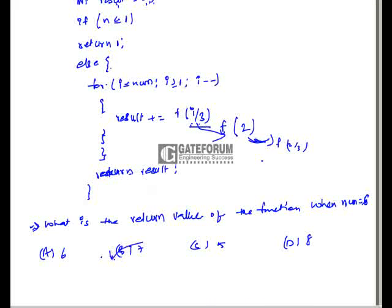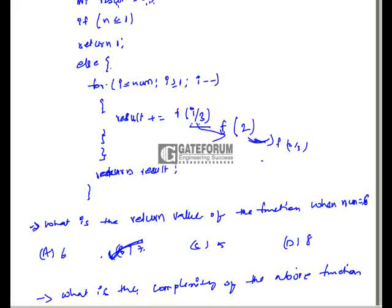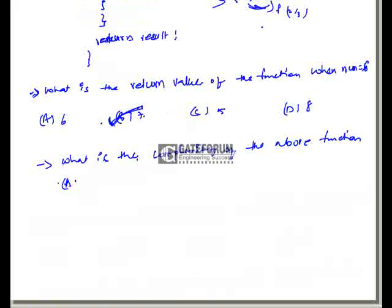Tracing through this, f(6) returns seven. So the answer to the first question is seven. The second question for the same data asks: what is the time complexity of the above function? The options are: option A, O(n); option B, O(n²); option C, O(n log n base 3); option D, none of these.